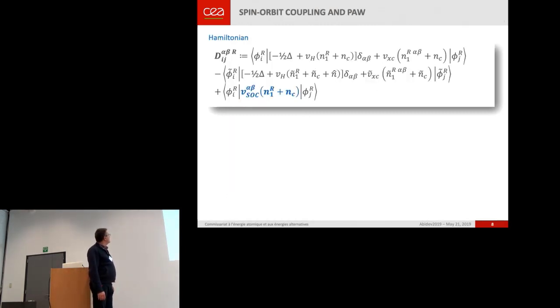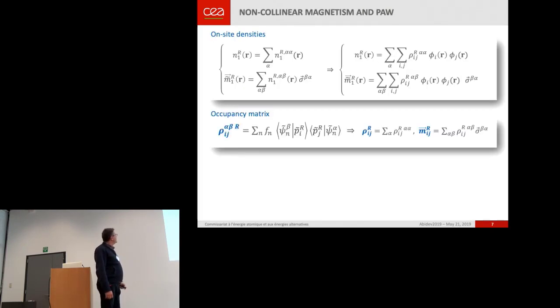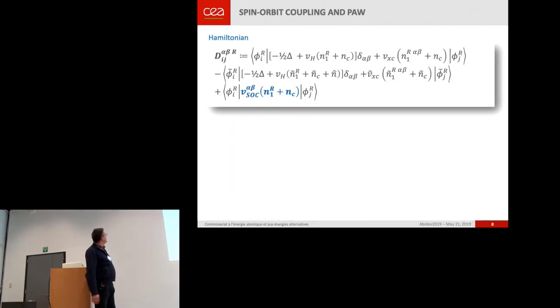Okay, so spin-orbit coupling and PAW. And it's strange because I put... Yeah, the reference is there. It's a pretty old paper of Kresse and Joubert from 1999. And spin-orbit coupling. I don't want to go into details, but spin-orbit coupling, to obtain that, you have to add the spin-orbit Hamiltonian in the Hamiltonian.